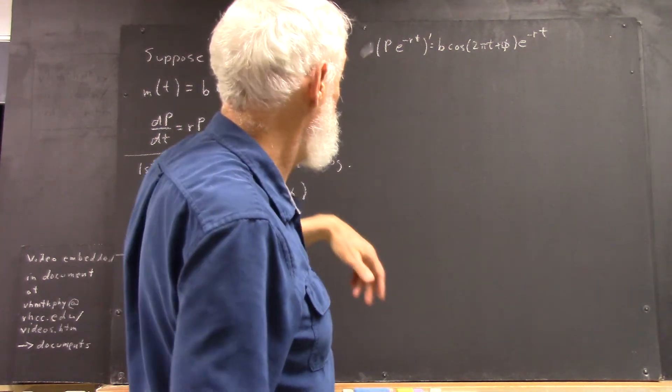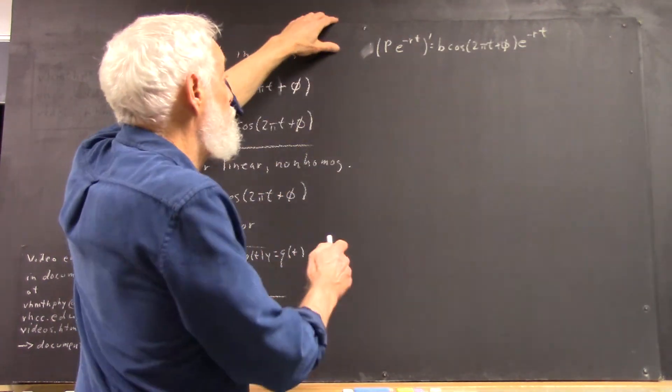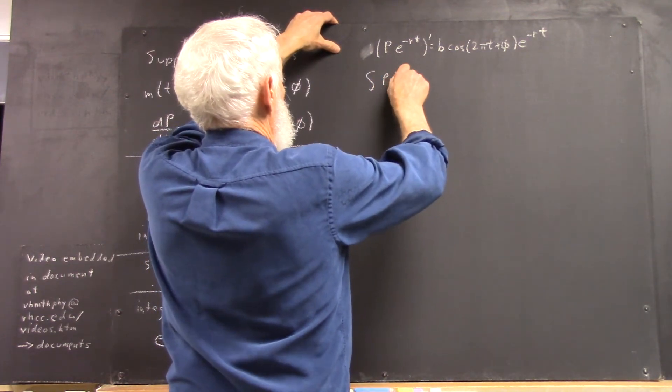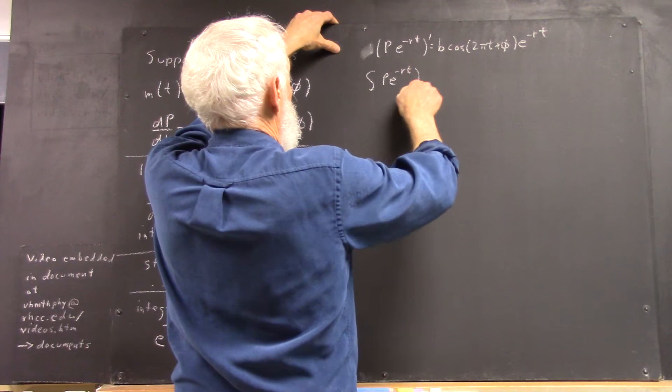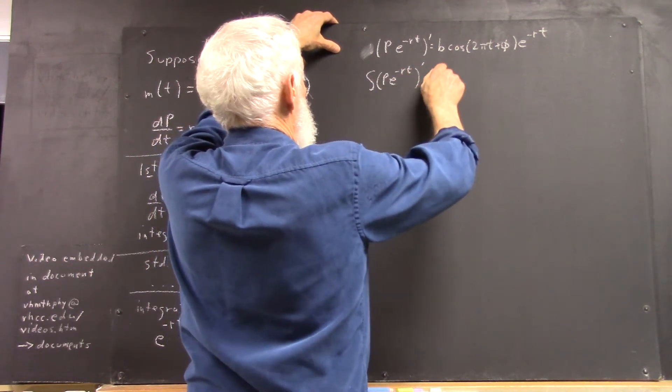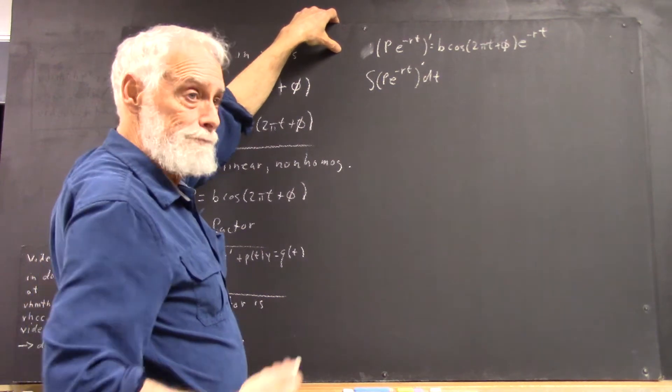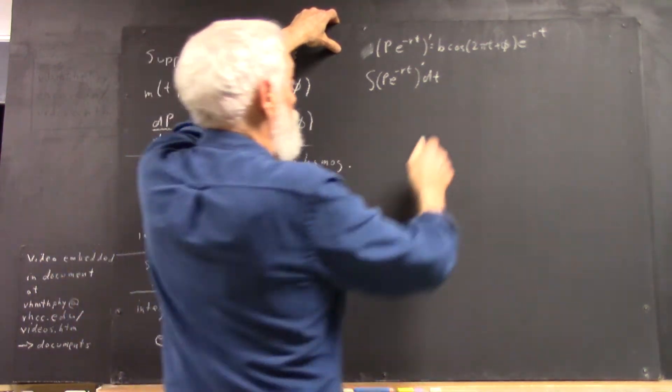Okay, well, what you do with this is you integrate both sides. And the prime is, of course, with respect to your independent variable, which is t.